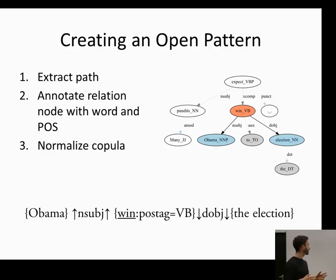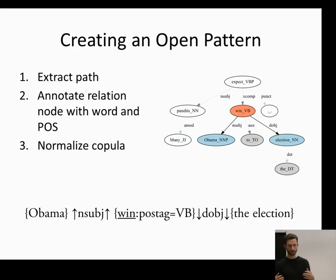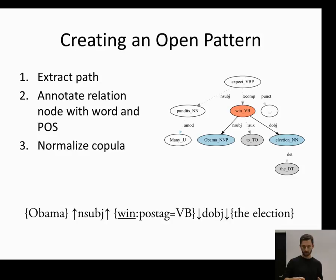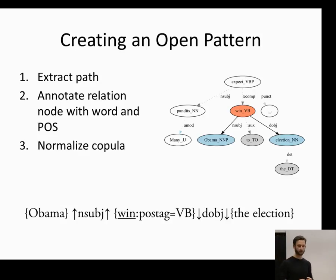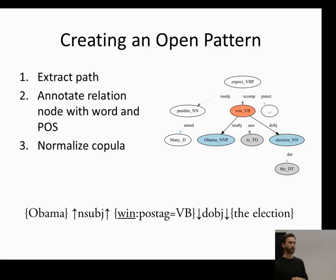Now it's time to create an open pattern. In a dependency parse, nodes are words with part-of-speech tags and edges are directed grammatical relations. We chart a path between the arguments and the relation highlighted in the parse. We annotate the relation node with the word and part of speech — adding a VV tag in the middle. If there are copula forms of 'to be,' we normalize them all to just 'be.' The problem is this pattern is not very general — it would only find 'Obama wins the election.'